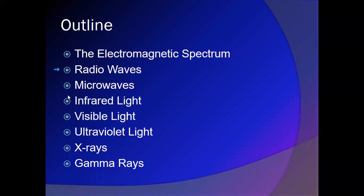We're going to start with radio waves first — the longest wavelength and the lowest frequency. Then we'll go to microwaves, which are essentially just shorter wavelength radio waves. They are used in communication just like radio waves, but they tend to have a higher bandwidth.